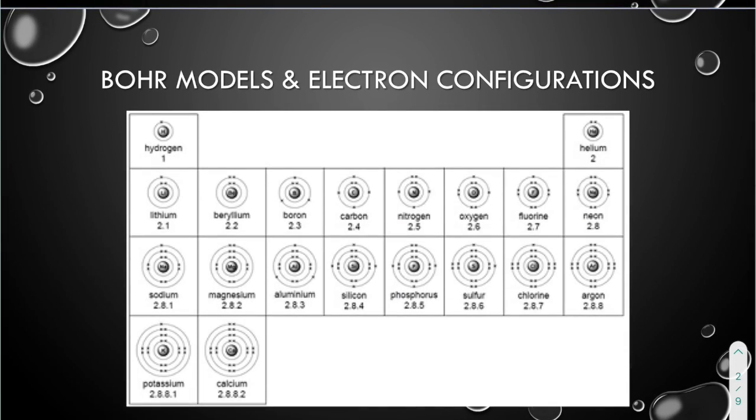So here is what our first 20 elements should look like, our Bohr models. The numbers underneath the element name is the electron configuration. The electron configuration is how many electrons are in each energy level, with the first number being the energy level closest to the nucleus. For example, hydrogen only has one electron, so there's only one dot in the nucleus, and the electron configuration is one. If we looked at oxygen, oxygen has two electrons in the first energy level and six electrons in the second energy level, so the electron configuration is two and six for a total of eight electrons.